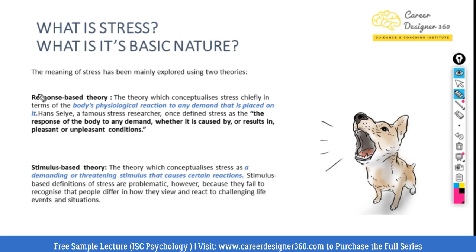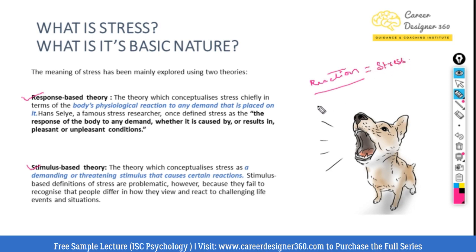Stress has been described by different scientists using different theories and approaches. Some have called stress a mental condition, some have called it a disease. Two main theories are the response-based theory and the stimulus-based theory. The response-based theory conceptualizes stress as the body's physiological reaction to any demand. In the example of a dog barking at a child, the child's reaction — crying or running — is the stress according to the response-based theory.